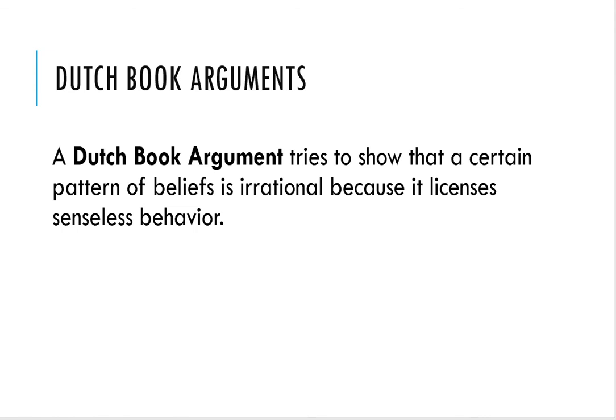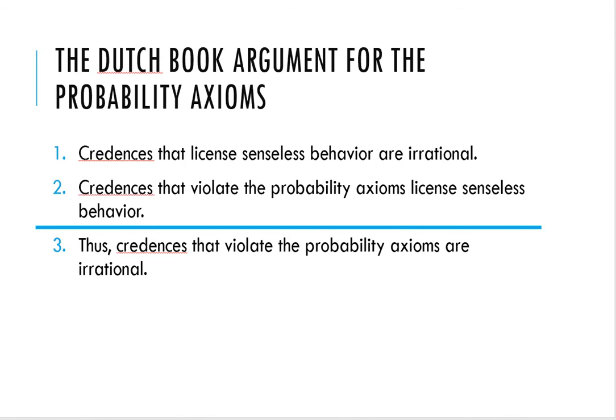So what is the Dutch book approach? A Dutch book argument tries to show that a certain pattern of beliefs is irrational because it licenses senseless behavior. Rational beliefs don't license senseless behavior. The general form of a Dutch book argument for probability axioms goes something like this: our credences, or levels of confidence in different propositions, shouldn't license senseless behavior — if they do, they're irrational. But credences that violate the probability axioms license senseless behavior. Thus, credences that violate the probability axioms are irrational. What we're going to look at is mostly the second premise — why credences which violate the probability axioms are going to license some senseless behavior.